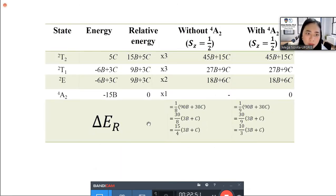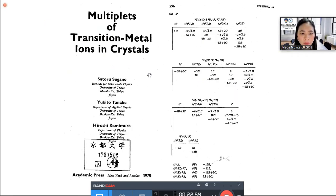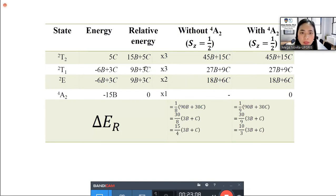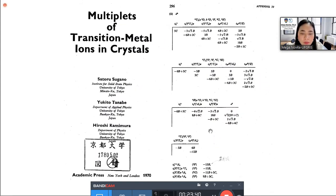This are the calculation. I obtained this value from the reference here, Sugano Tanabe Kamimura book, multiplets of transition metal ions in crystal. We obtained the energy here, the left one. And we got the calculation like this. The relative energy is estimated from quartet A2 to each levels. These are the degenerate levels. And without considering quartet A2, we obtain the calculation like this. So it is the equation. It should be like this. But when we consider the quartet A2 for Sz=1/2, then the calculation will be different.